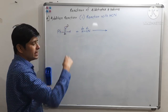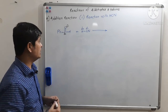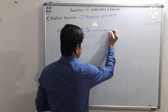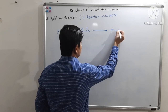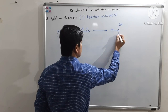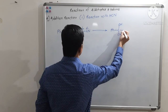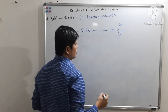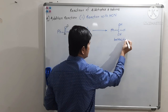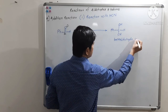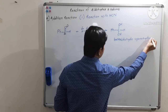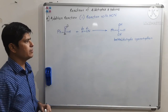The double bond gets converted to a single bond after addition. The product we get is Ph-CH(OH)-CN, which is benzaldehyde cyanohydrin.